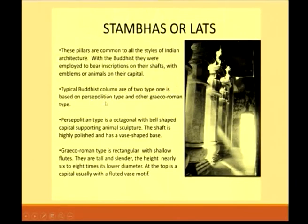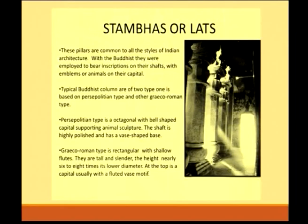There were two types of Buddhist stambas. The Persepolian type was an octagonal pillar with a bell-shaped capital which supported an animal sculpture; the shaft was highly polished and the base was vase-shaped. The Graeco-Roman type was rectangular with shallow flutes, less ornamental, more tall and slender — their height was almost six to eight times the lower diameter — with just a fluted vase motif at the capital. In the picture you see a Persepolian type pillar with a bell-shaped capital, vase base, and animal sculpture on top.